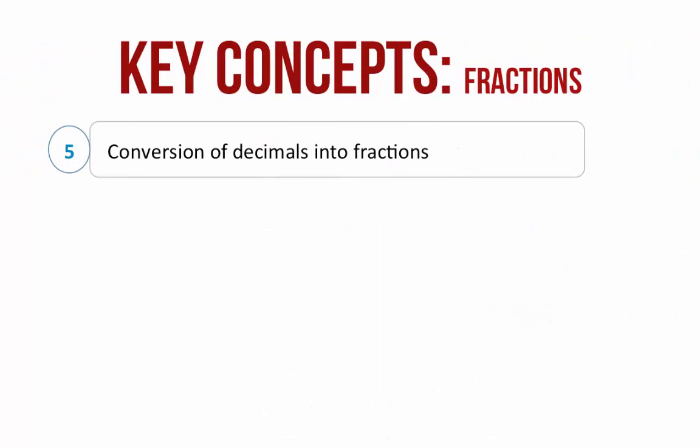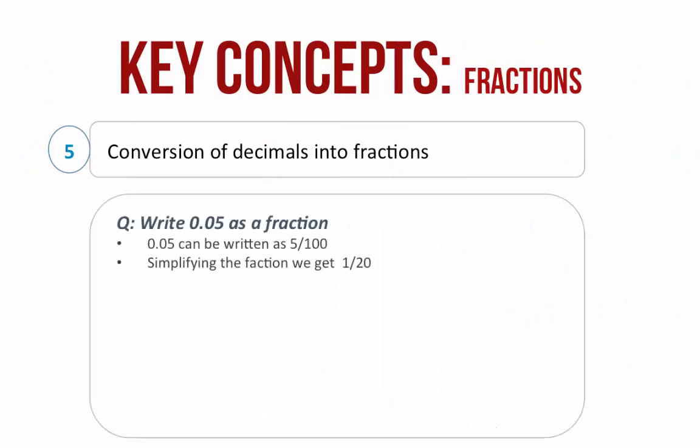Conversion of decimals into fractions. Let us take an example: write 0.05 as a fraction. 0.05 can be written as 5 divided by 100. Simplifying the fraction we get 1 by 20. Therefore, the fraction equivalent of 0.05 is 1 by 20.